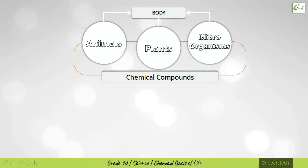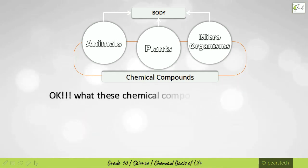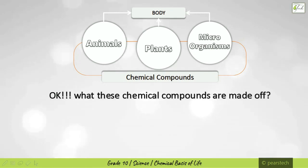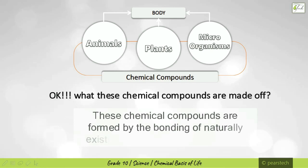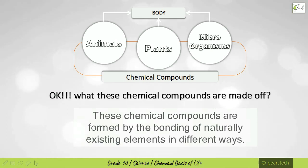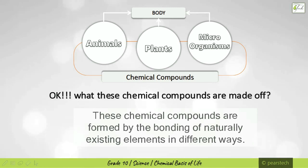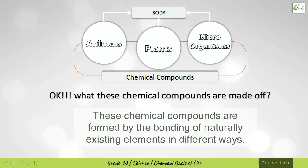So we understand that humans, animals, plants, and microorganisms all have a body, and this body is made out of chemical compounds. These chemical compounds are formed by the bonding of naturally existing elements in different ways — like different bricks are in a different form and different wood pieces are formed in a different way.